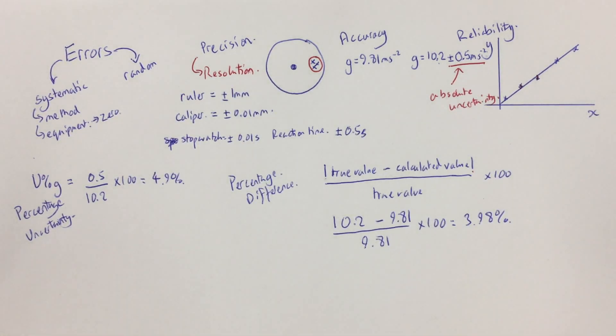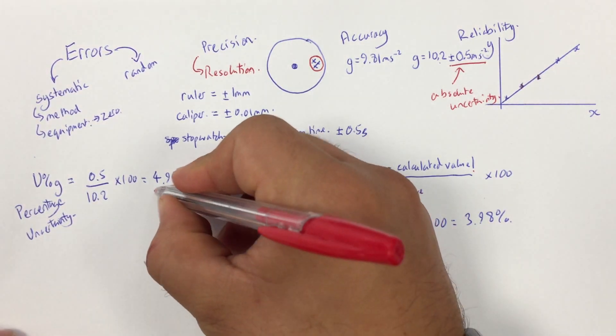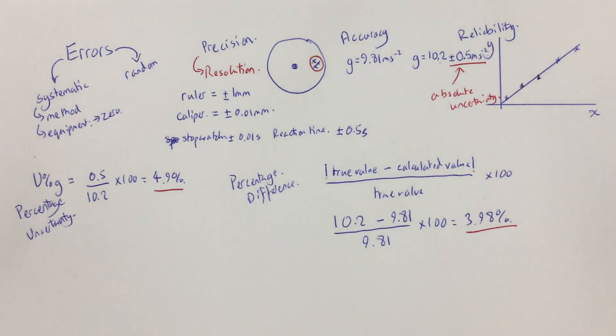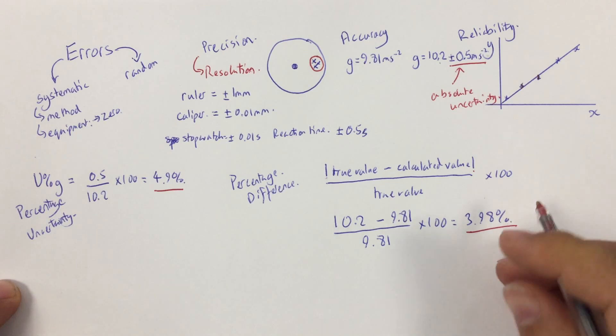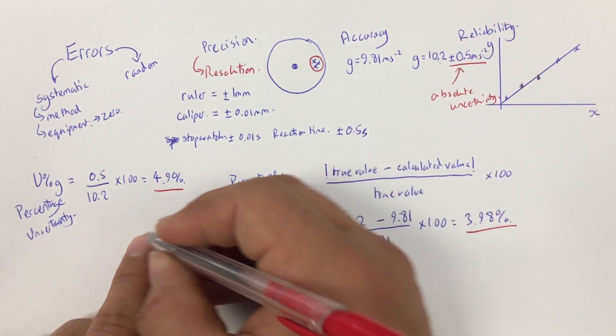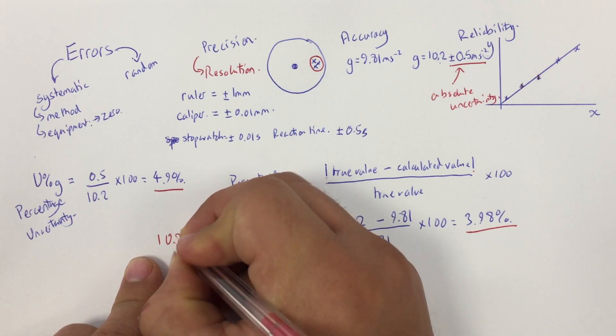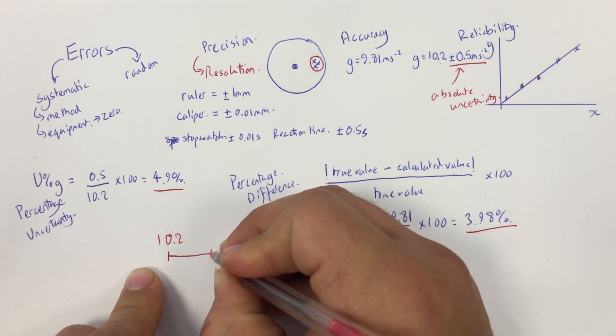Now, this is where we can finally assess whether we've been accurate or not. If we compare the percentage uncertainty and the percentage difference for this particular experiment, we can make a judgment on whether I've been accurate or not. Now, I have worked out that my percentage difference is 3.94, basically 4%, but my uncertainty is 4.9%. Now, that means I've measured, and if I do this as a number line, it will help.